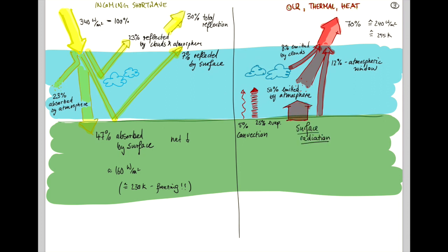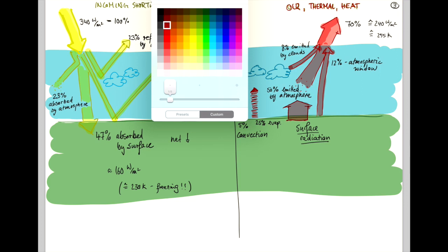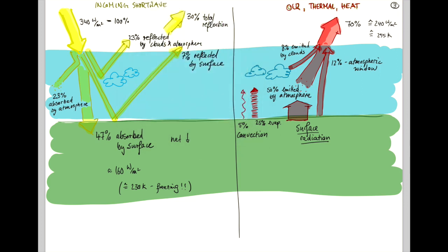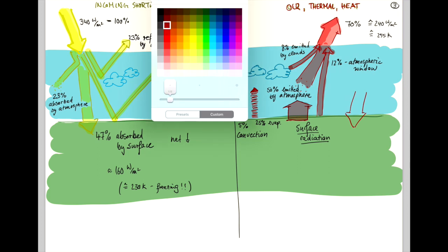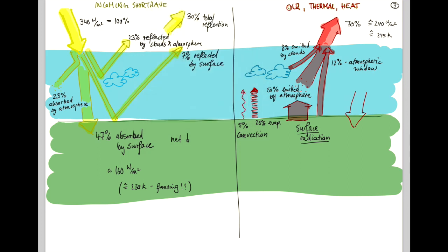Before we talk about surface radiation, we need to realize that the atmosphere emits a lot of energy up into outer space, but it also sends a lot of energy back. It absorbs all this energy, emits it in all directions, and actually sends about 340 watts per meter squared back to the surface of Earth. That happens to be, by chance, the same as the incoming solar radiation.